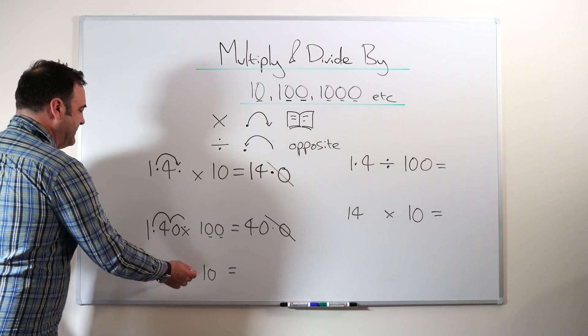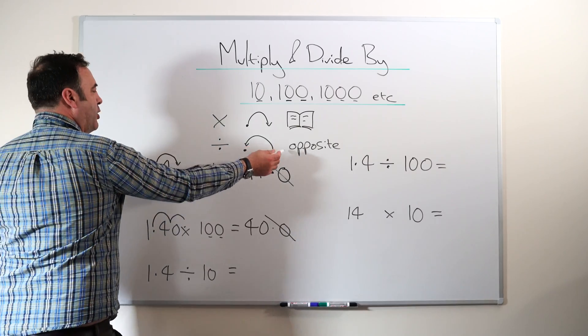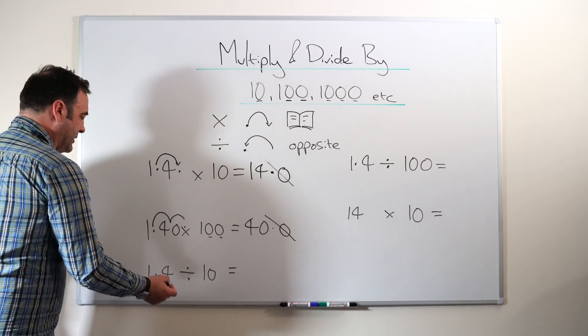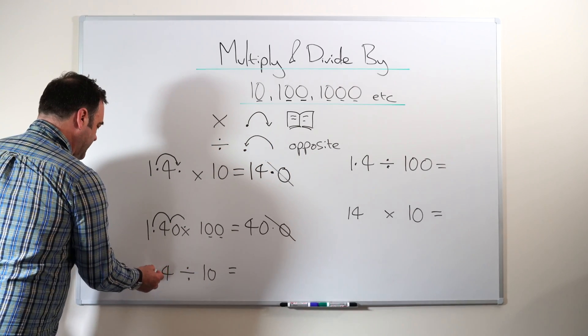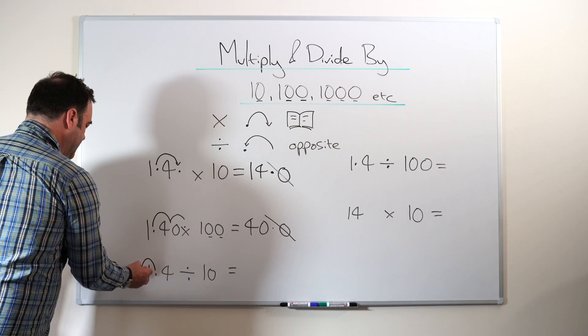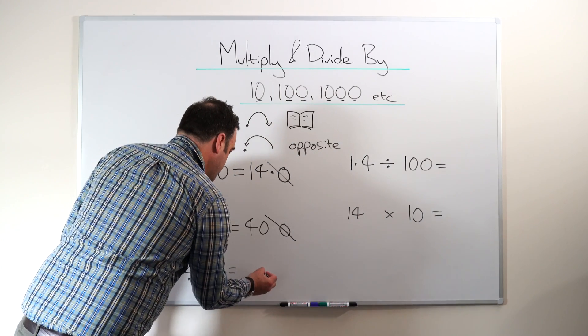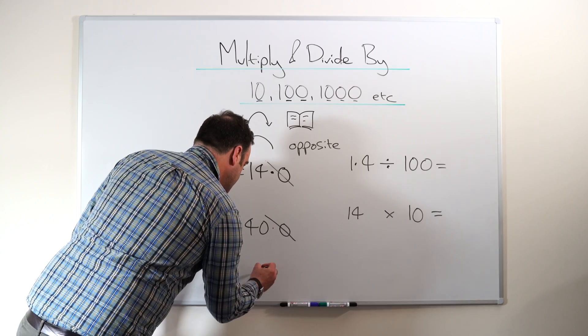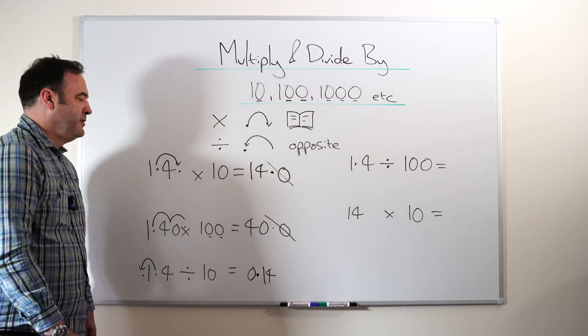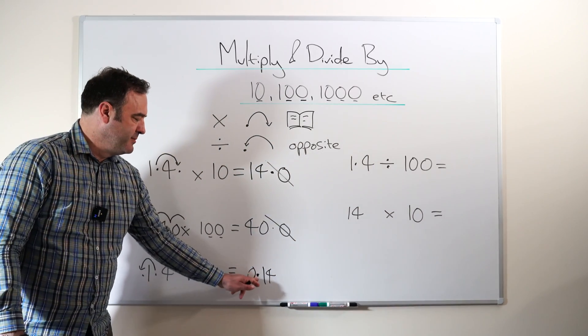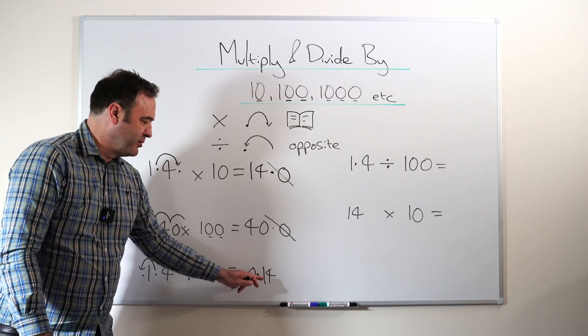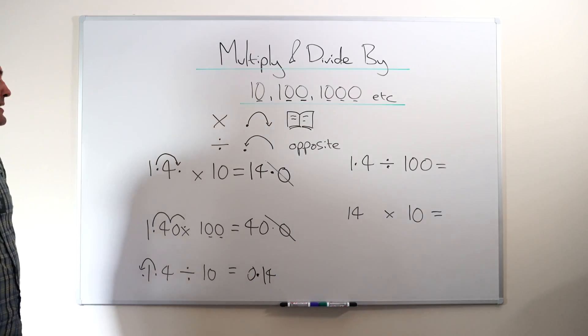1.4 divided by 10. Now this time we're going the opposite way to the way we read and write, and it's one jump. So we are going this way and it becomes 0.14. Now we don't write point 14, we put 0.14. We're allowed one zero before the dot. We don't have zero zero point, we have zero point. Next one.